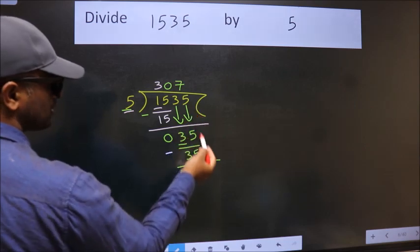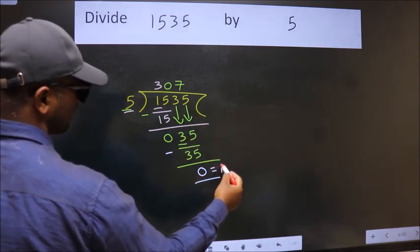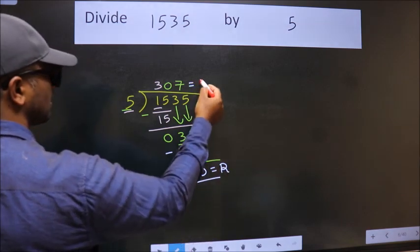No more numbers to bring down, so we stop here. This is our remainder and this is our quotient.